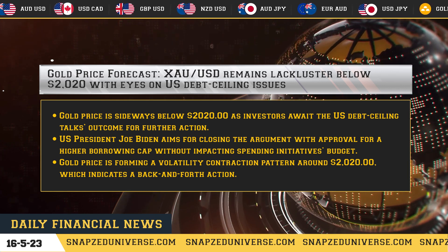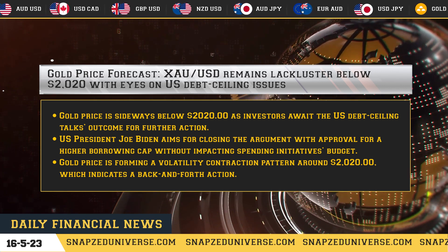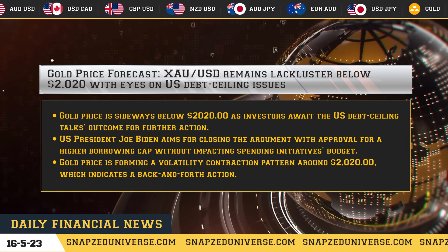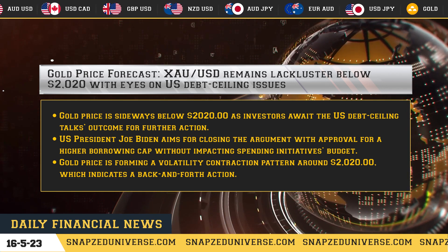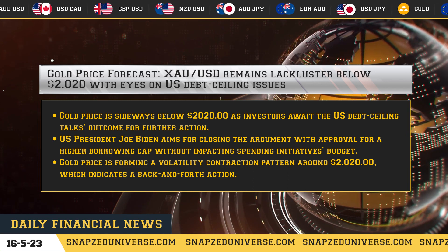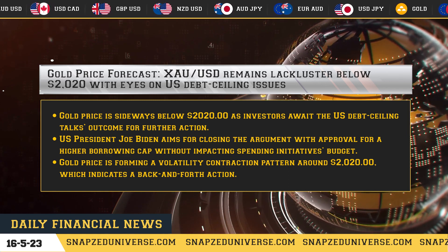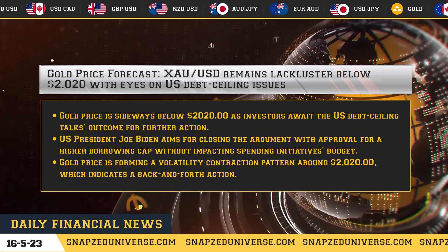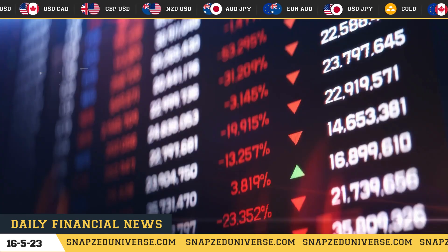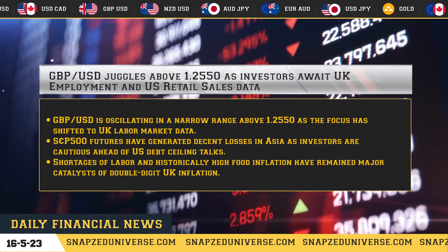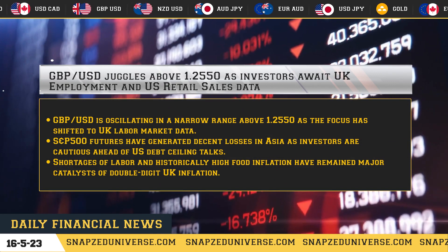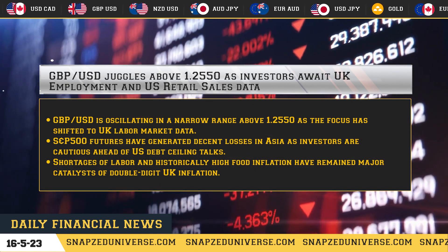U.S. President Joe Biden aims to close the argument with approval for a higher borrowing cap without impacting spending initiatives. Gold price is forming a volatility contraction pattern around $2,020.00, which indicates a back-and-forth action.